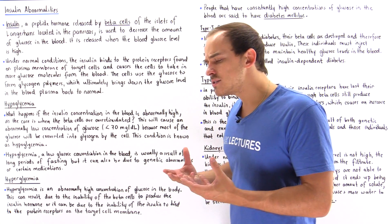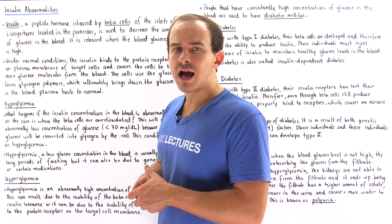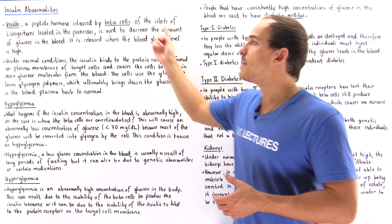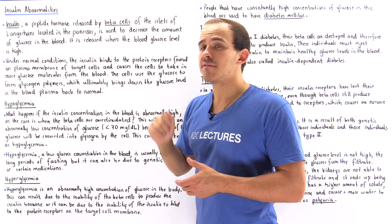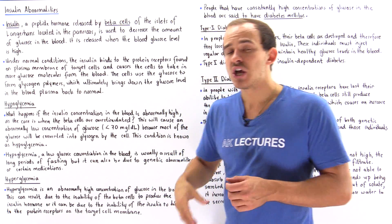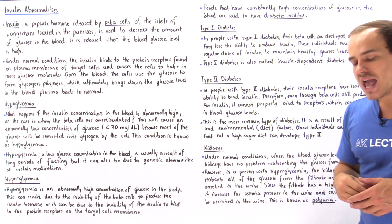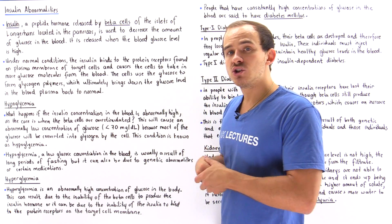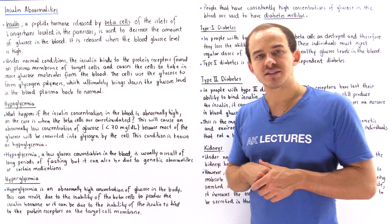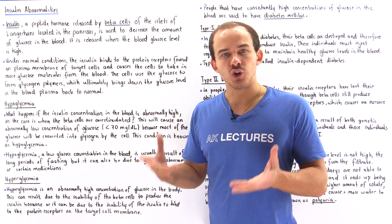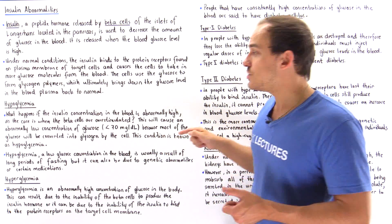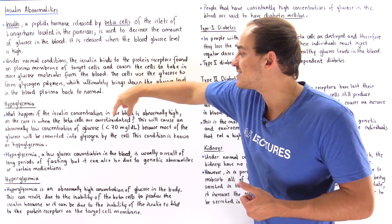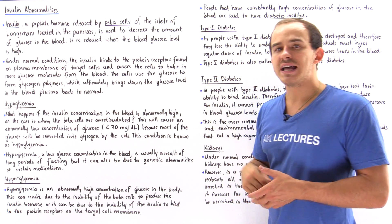One cause of a low concentration of glucose inside our blood is the over-stimulation of the beta cells. If the beta cells of the pancreas are over-stimulated, they produce too much insulin. Too much insulin causes too much glucose to be transported into our cells, lowering the blood glucose concentration below normal. The concentration characteristic of hypoglycemia is 70 milligrams per deciliter or below.